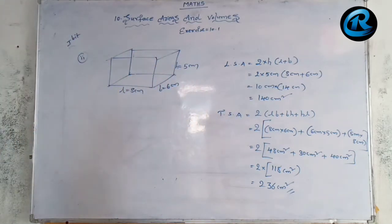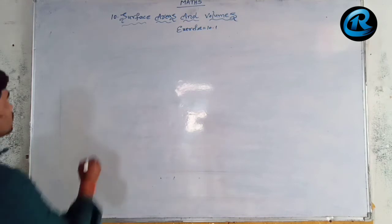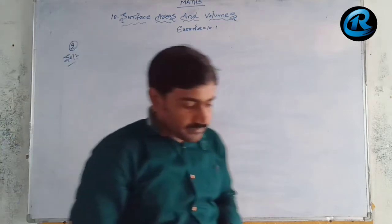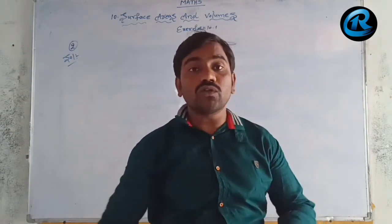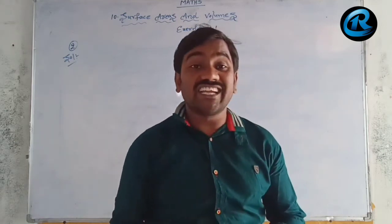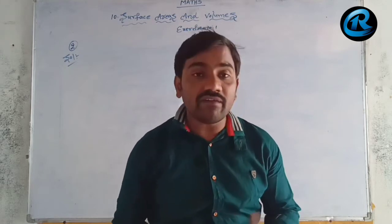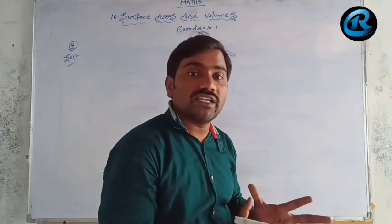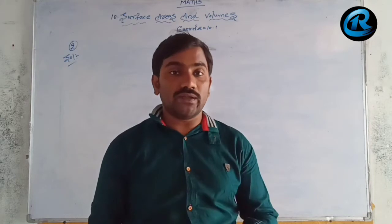We have solved the first set of problems. Now we go for the second question. The total surface area of a cube is given as 1350 square meters. We need to find the volume of the cube.